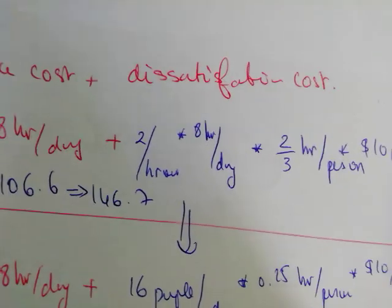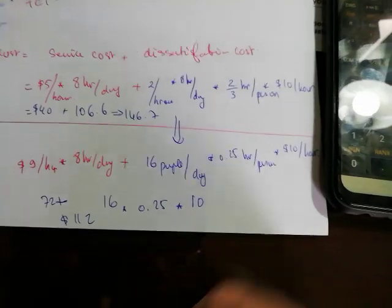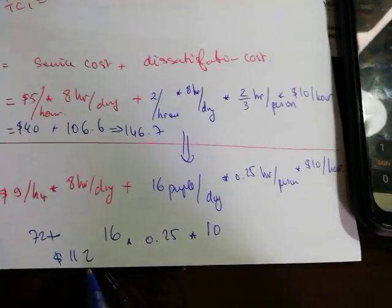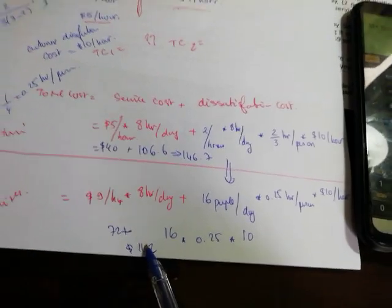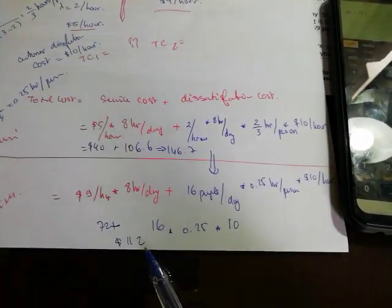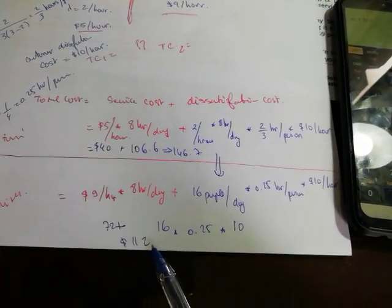For Smith: nine times eight equals 72, plus 16 times 0.25 times 10. Sixteen times 0.25 is four, times ten is 40, plus 72 equals 112. In this example, definitely Smith, the faster more expensive one, is more feasible for us.